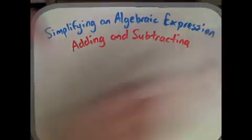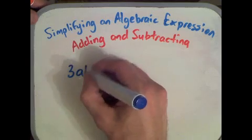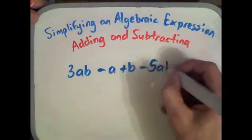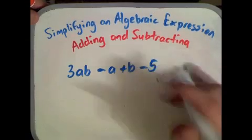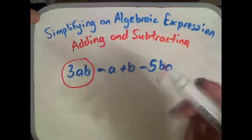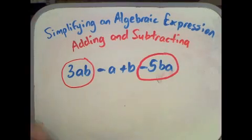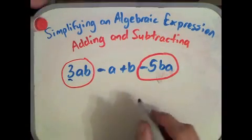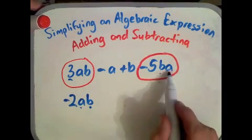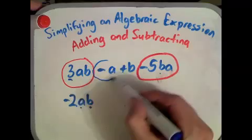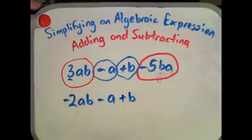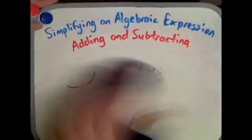Let's look at another example: 3ab minus a plus b minus 5ab. Now ab can also be written as ba, so it means the same thing. 3ab minus 5ba is simply negative 2ab — we can subtract those because they are the same. On the end we tag minus a plus b, two different terms.